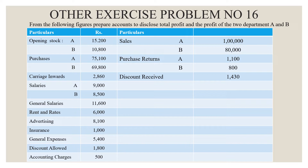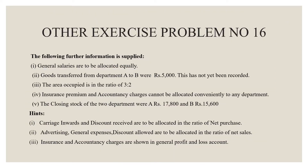In this problem, goods are transferred from one department to another. We will calculate the net profit and loss per department and the total profit. An insurance premium and accountancy charge cannot be allocated conveniently to any department, so we will share the common expenses in proportion.